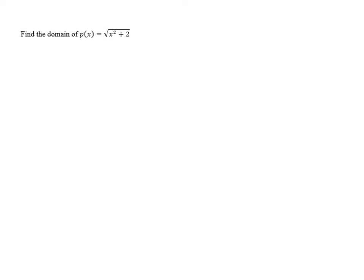Find the domain of p of x equals the square root of x squared plus 2. We don't have any fractions, so we don't have to worry about denominators equaling 0, but what we do need to make sure is that the radicand is greater than or equal to 0. So we need x squared plus 2 to be greater than or equal to 0.